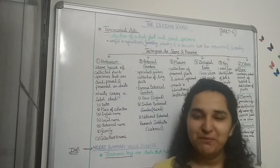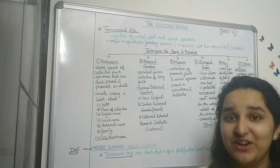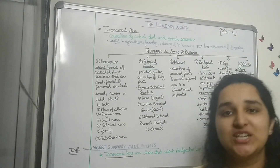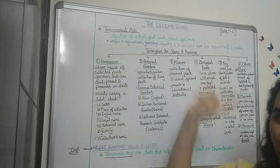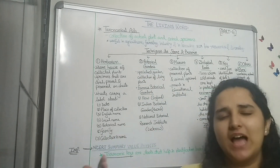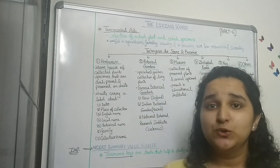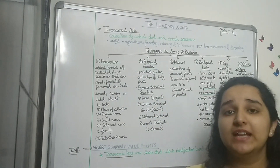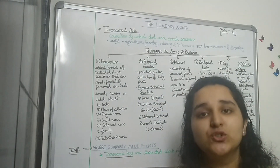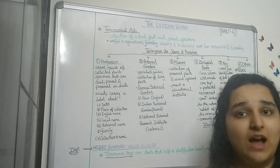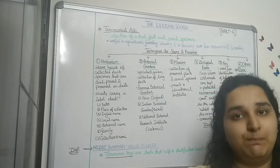Hello everyone, welcome to my YouTube channel. Here I am with Part 4 of Class 11 Biology, Chapter 1: The Living World. As promised, we are going to begin with the taxonomical aids. The word 'aid' means to help, so taxonomical aid is a sort of help that assists us in identifying plant species and animal species.